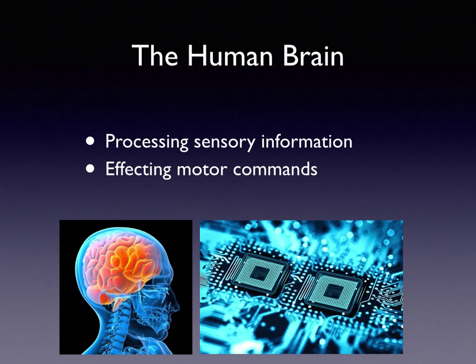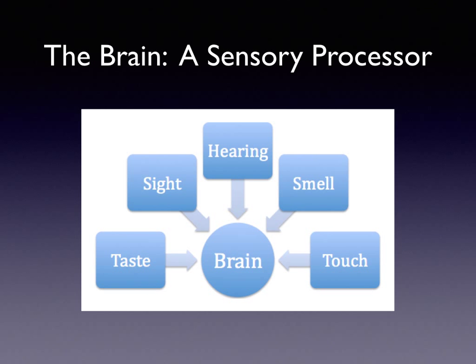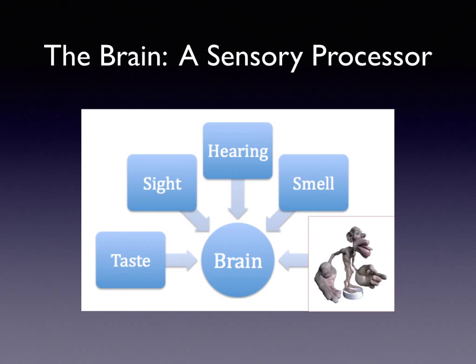The human brain is a supercomputer. It receives sensory information from a number of domains and then it affects motor commands. The sensory source of input can be either taste, sight, hearing, smell, or touch — what we term the senses. I'm going to talk predominantly about the sensation of touch.